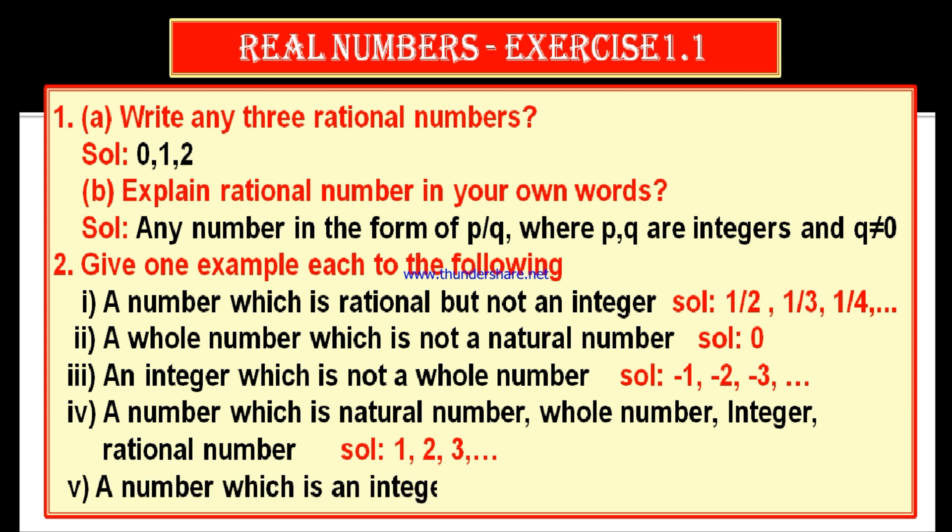Fifth bit: a number which is an integer but not a natural number. It should be an integer but not a natural number, so it may be 0 or negative numbers. Any negative number is not a natural number. Therefore, take 0, minus 1, minus 2, minus 3 and so on — all these are integers but are not natural numbers.